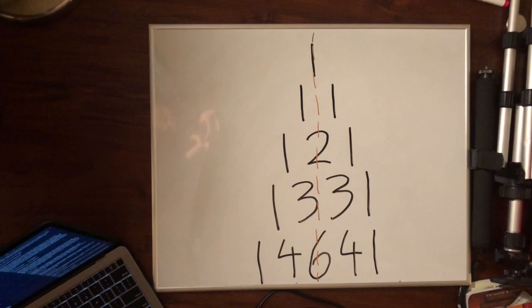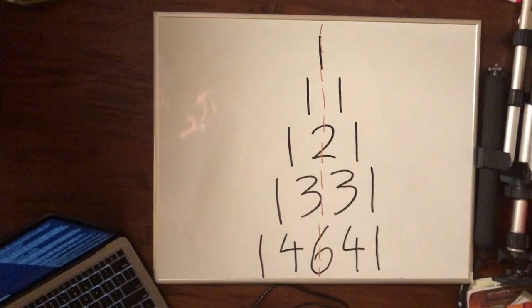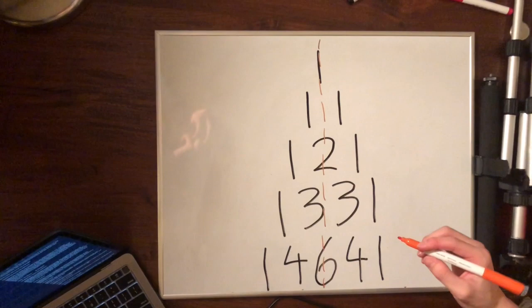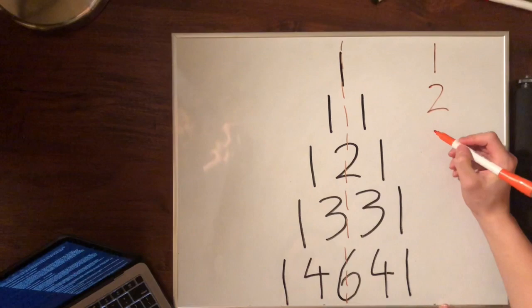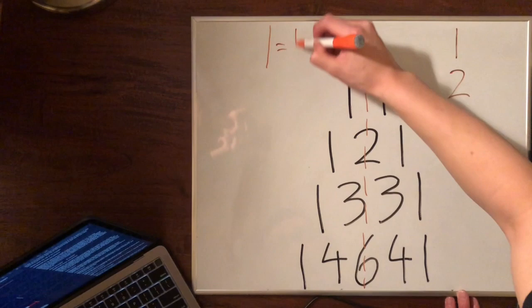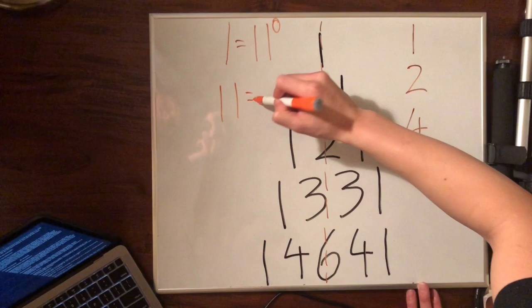When you add the numbers in each row together, they double after each row. Did you also know each line is the power or exponents of 11? For example, the first line is just one. One is the value of 11 to the 0 power. The next line is read as 11, and the value is 11 to the 1 power. This one is 121, which is 11 to the 2nd power.